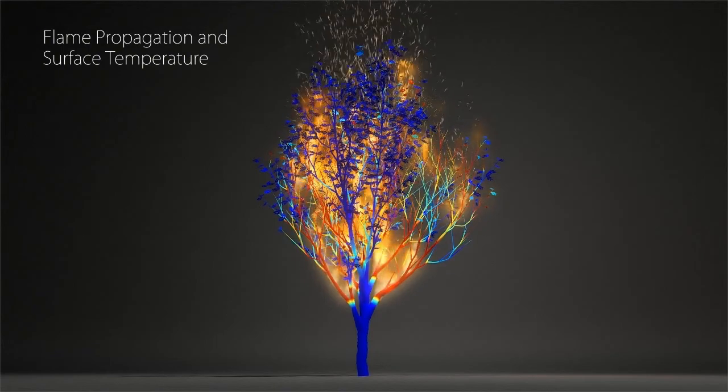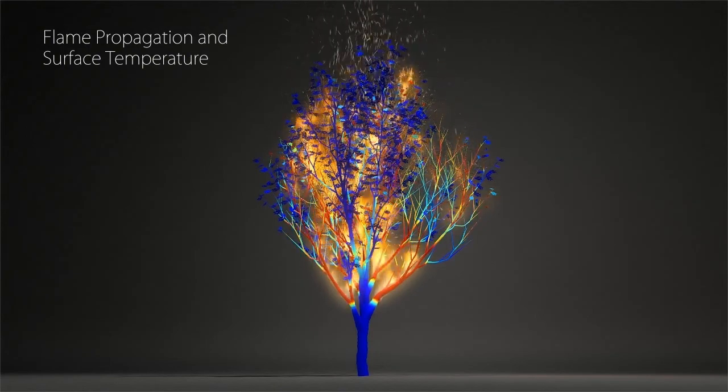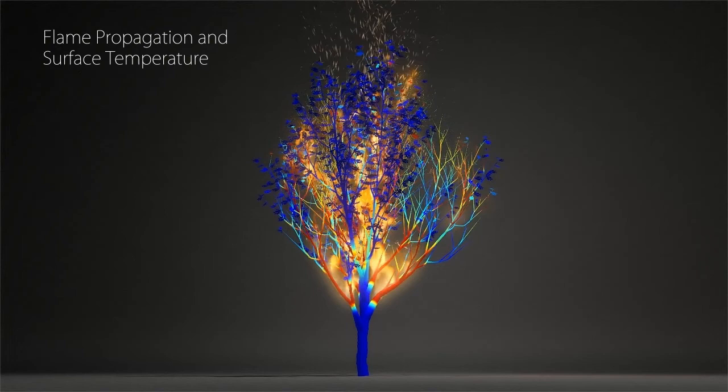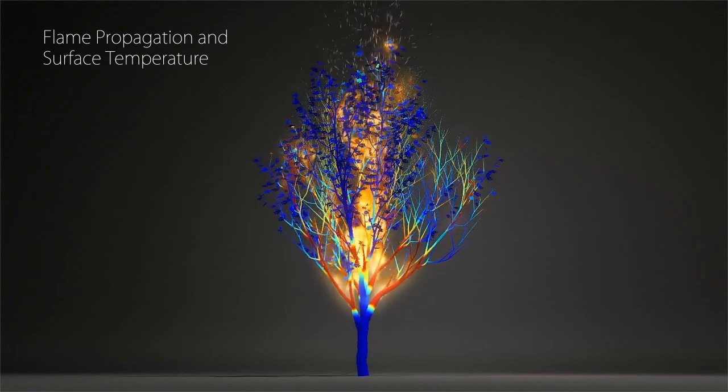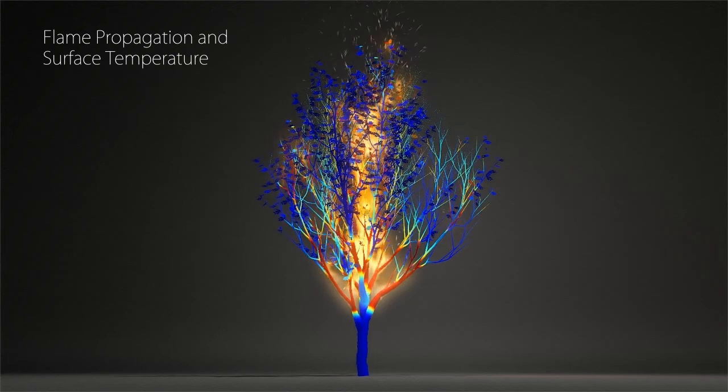Each particle stores biological and physical attributes that drive the kinetic behavior of the plant and the exothermic reaction of the combustion. Here we visualize the temperature on the surface mesh while the flames propagate through the branching structure.